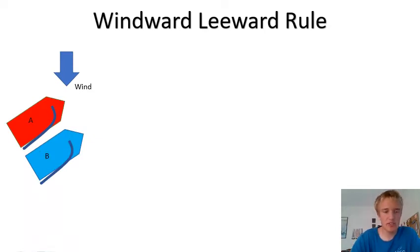Now just to be clear, boat A is the boat closest to the wind so they are the windward boat, whereas boat B is the leeward boat because they are furthest away from the wind. This means that B has priority on A.